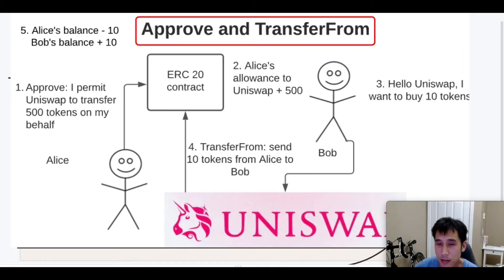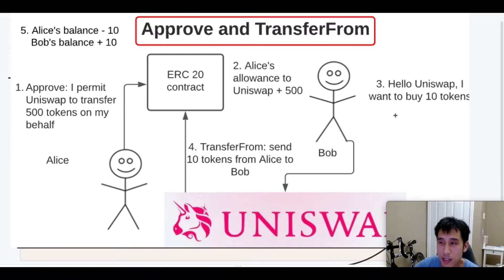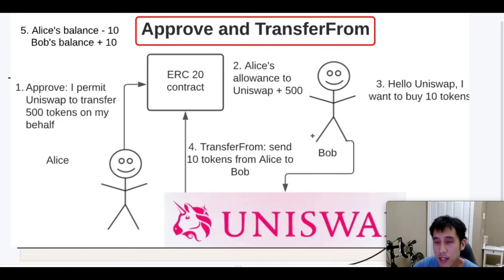Let's say Alice wants to sell some of her tokens through Uniswap. In that case, Alice can grant Uniswap permission to transfer tokens on Alice's behalf. Later on, when Bob wishes to buy Alice's tokens through Uniswap, Bob can send a payment to Uniswap. Then, when Uniswap receives the payment, Uniswap can call transferFrom to send the tokens from Alice to Bob on Alice's behalf. This is convenient for Alice because Alice does not have to directly call the ERC-20 contract to make the transfer.